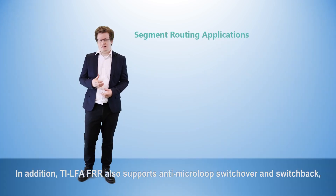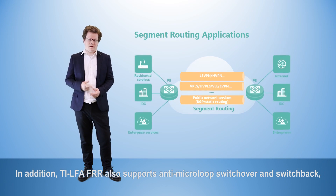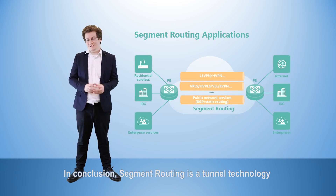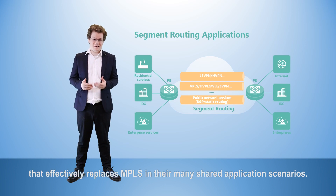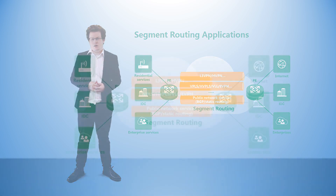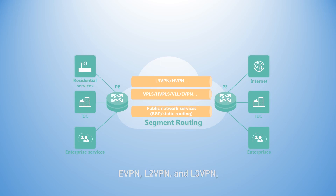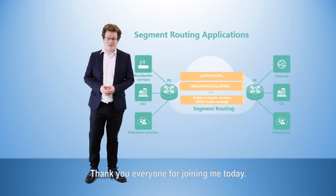In addition, TI-LFA FRR also supports anti-micro-loop switchover and switchback, enabling end-to-end FRR and simplifying O&M. In conclusion, segment routing is a tunnel technology that effectively replaces MPLS in their many shared application scenarios. Multiple common services that utilize MPLS tunnels, such as public network services, eVPN, L2VPN, and L3VPN, can be smoothly switched over to segment routing tunnels. Thank you everyone for joining me today.